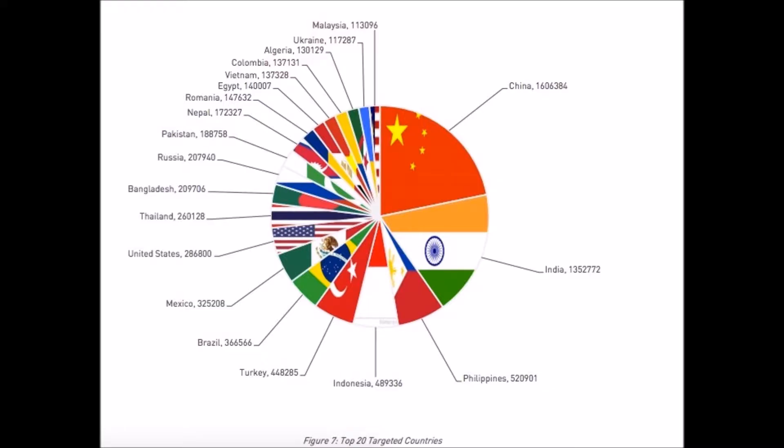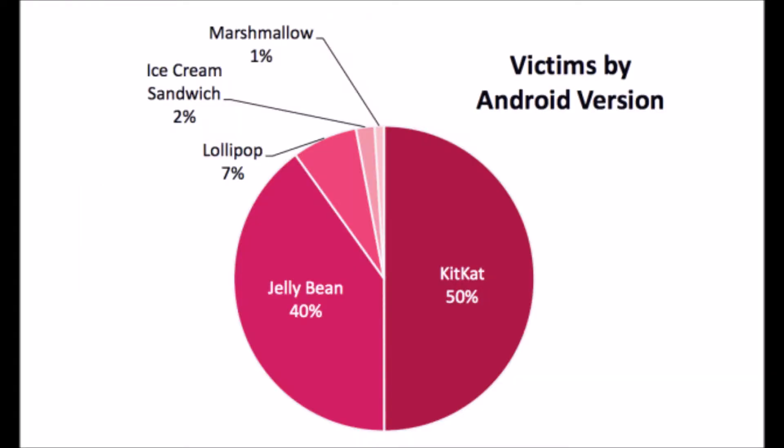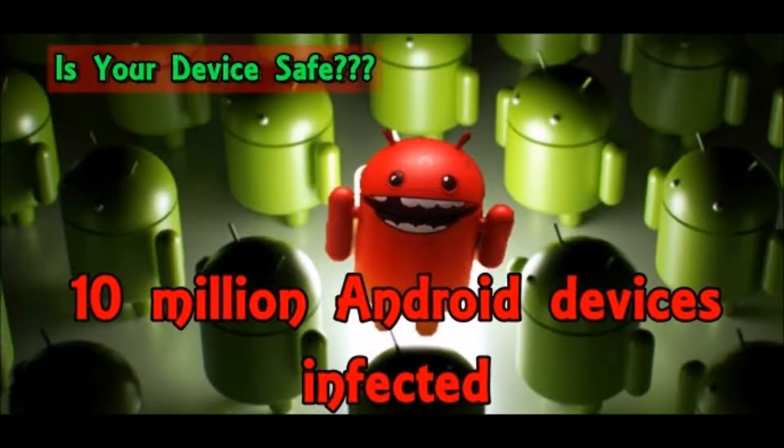HummingBad has infected different versions of Android: approximately 50% of affected Android devices run Android KitKat, 40% run Android Jelly Bean, 7% run Lollipop, and the remaining 3% comprise devices running Android Marshmallow and Ice Cream Sandwich.